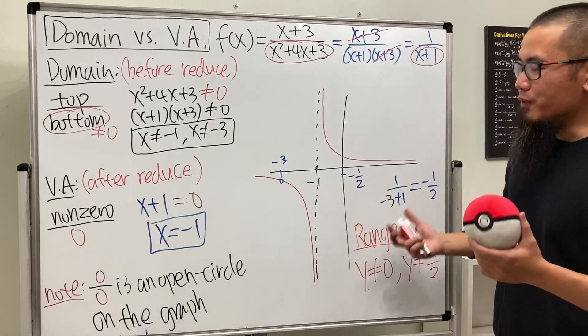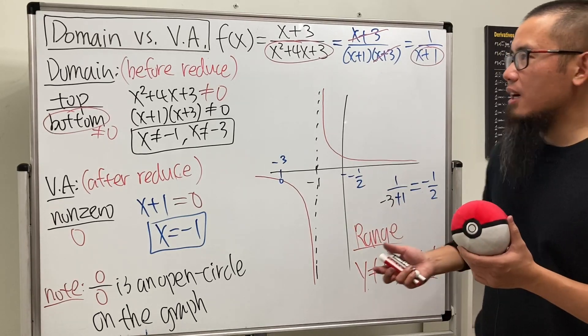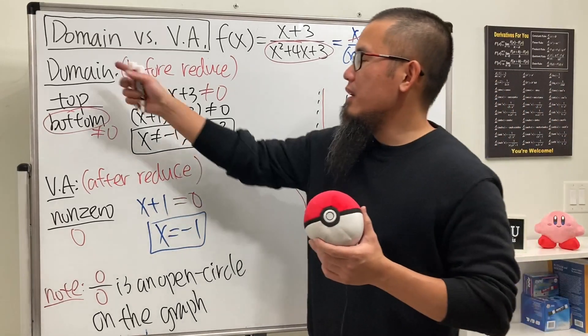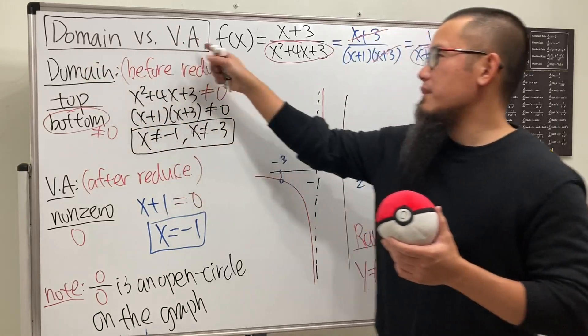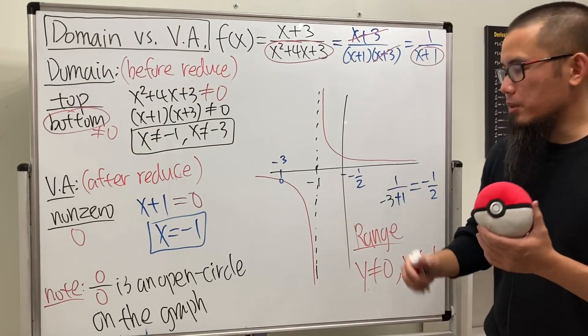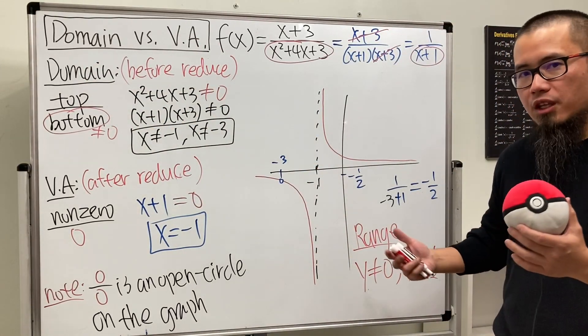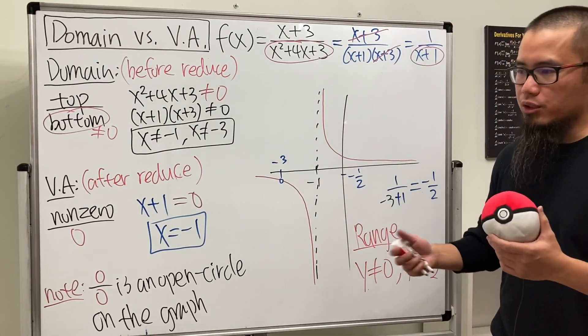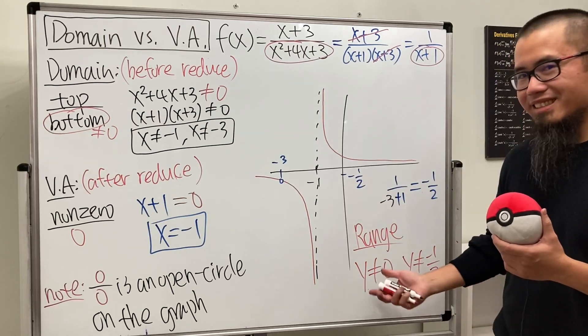Hopefully this helps and clears up the idea behind finding the domain versus finding the vertical asymptote of a rational function. If you have any questions, leave them below, and as always, that's it.